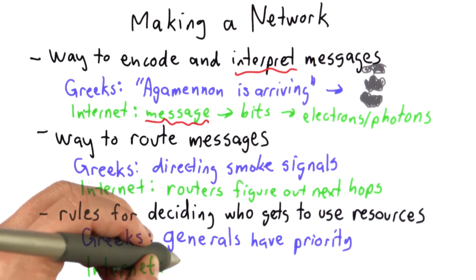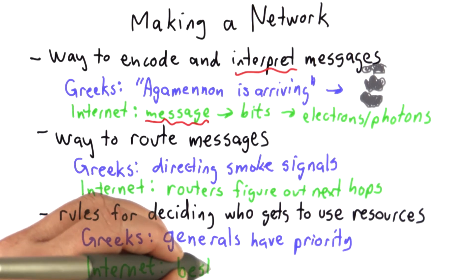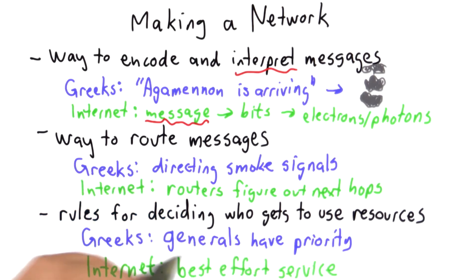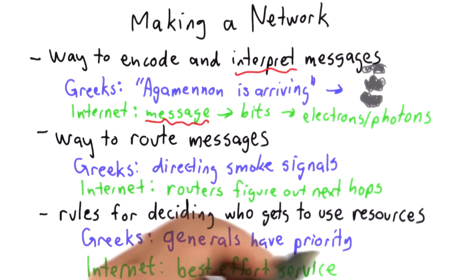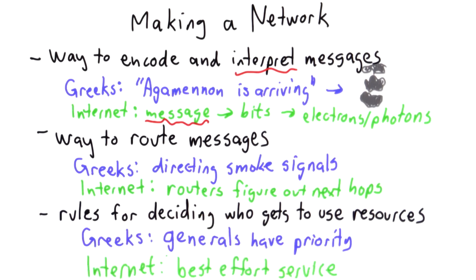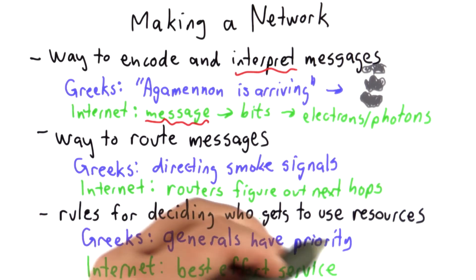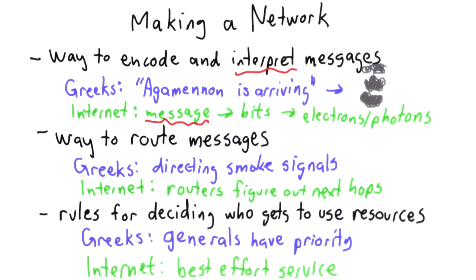What we really get on the Internet is what we call best effort service. If your message needs to go over the same link as some other message, the router can only send one message at a time, and it's up to the router to decide what to do. There are different policies that different routers follow — there's no general rule enforced on the whole Internet. This means that sometimes your packet might just get dropped, and there's no guarantee when you send a message on the Internet that it actually gets to where you want it to.